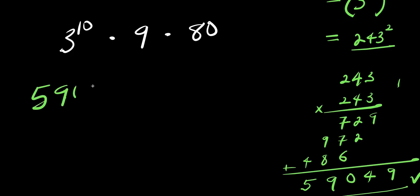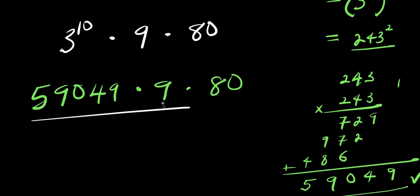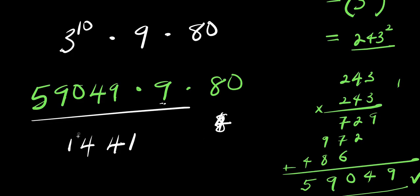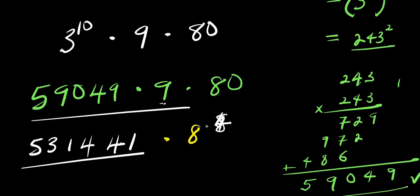So I have 59,049 times 9 times 80. Let me first multiply 59,049 times 9. 9 times 9 is 81, write 1 carry 8. 9 times 4 is 36, plus 8 is 44, write 4 carry 4. 9 times 0 is 0 plus 4 is 4. 9 times 9 is 81, write 1 carry 8. 9 times 5 is 45, plus 8 is 53. So I have 531,441. The next step is to multiply this result by 80.